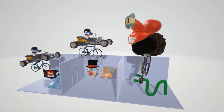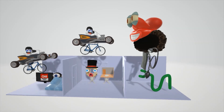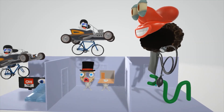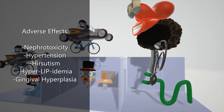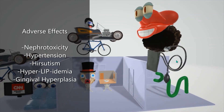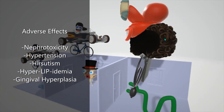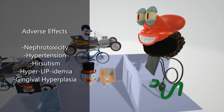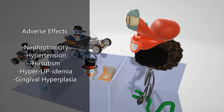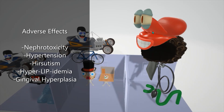Now let's talk about toxicity and adverse effects. The first thing we note is this nephron here that's exploding — nephrotoxicity is a really bad adverse reaction to cyclosporine. We also have the blood pressure cuff, which represents hypertension. We have this unwanted hair for hirsutism, which is a side effect of cyclosporine. We have these hyperlips for hyperlipidemia. And we have the gums coming out over here — gingival hyperplasia.